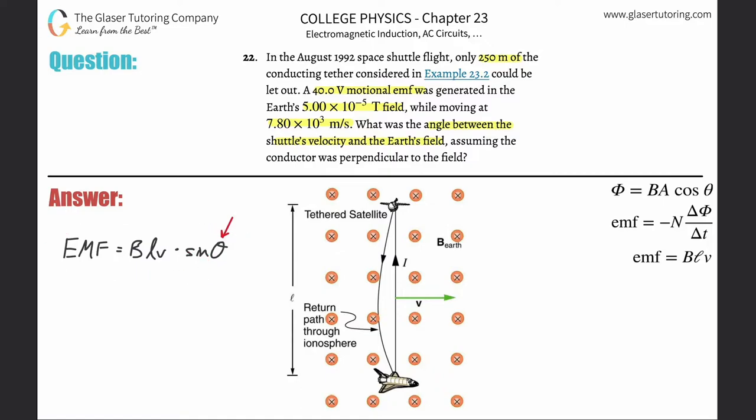Now I'm going to plug in everything that I know. So the motional EMF that is induced, they told us is 40 volts. The magnetic field strength, they told us the Earth's field is going to be 5 times 10 to the minus fifth. The length of the tether is going to be 250 meters.